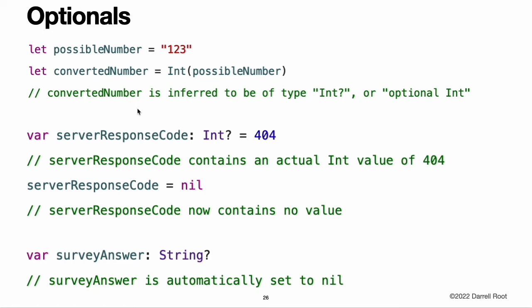Here is an example of how optionals can be used to cope with the absence of a value. Swift's Int type has an initializer which tries to convert a String value into an Int value. However, not every string can be converted into an integer. The string "123" can be converted into the numeric value 123, but the string "hello, world" does not have an obvious numeric value to convert to. Because the initializer might fail, it returns an optional Int rather than an Int. An optional Int is written as Int?, not Int. The question mark indicates that the value it contains is optional, meaning it might contain some Int value or it might contain no value at all. It cannot contain anything else, such as a Bool value or a String value.